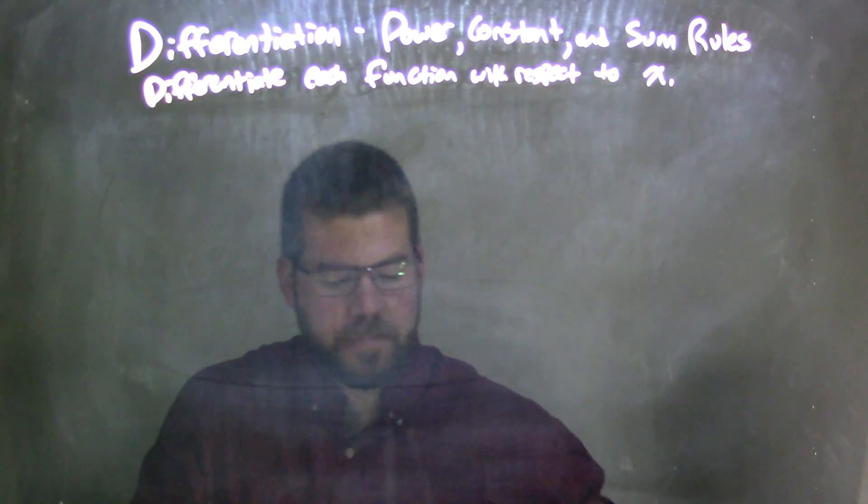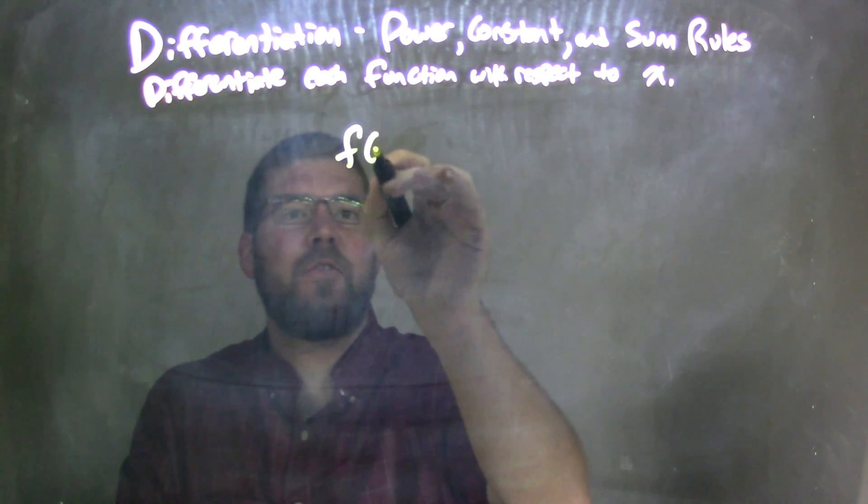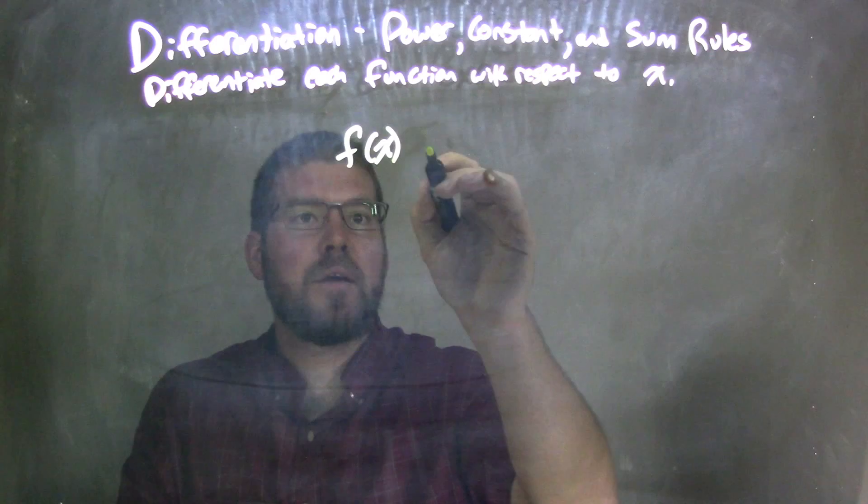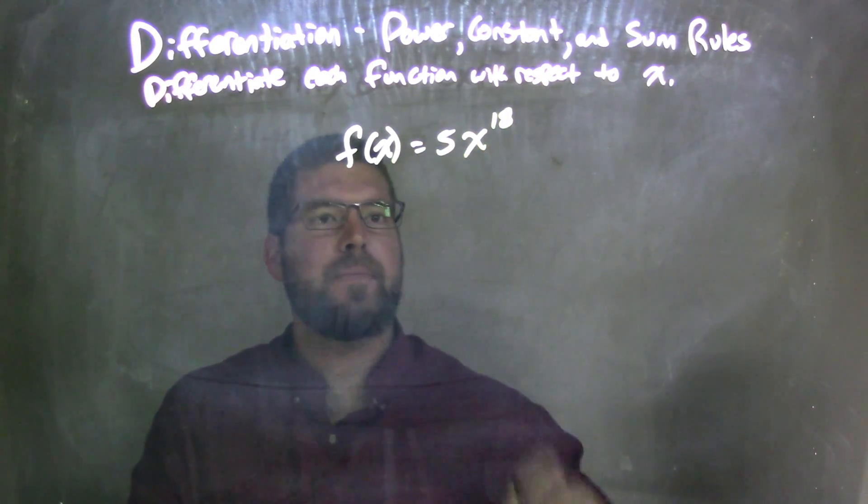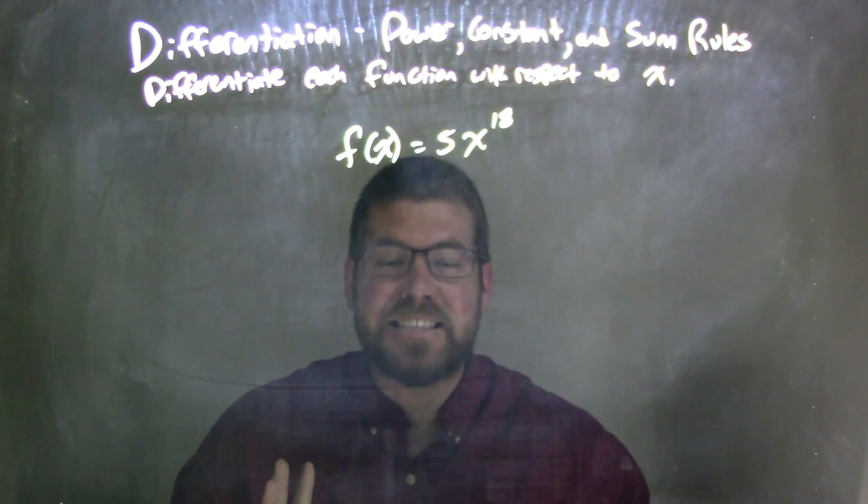So if I was given this function, f of x is equal to 5x to the 18th power.